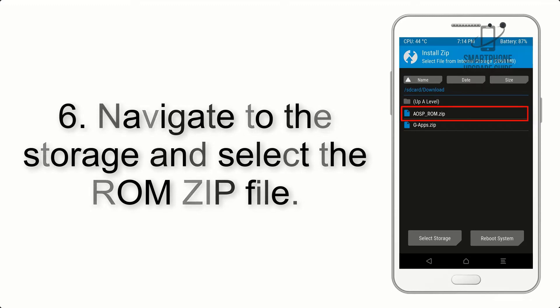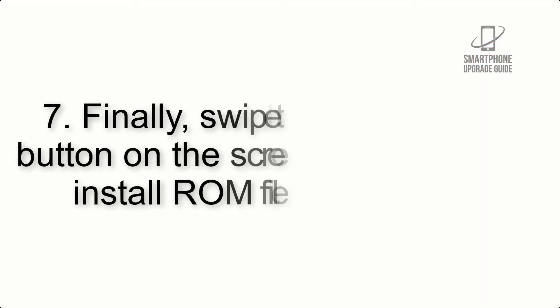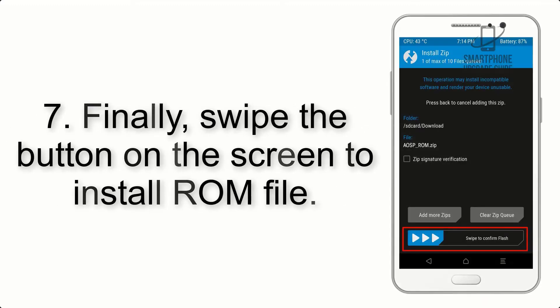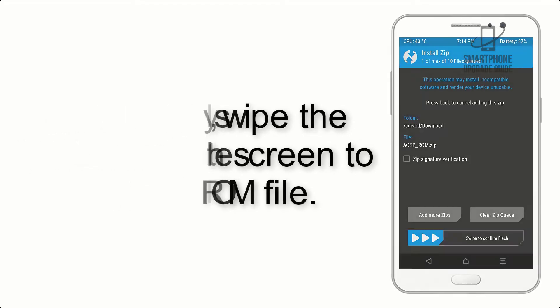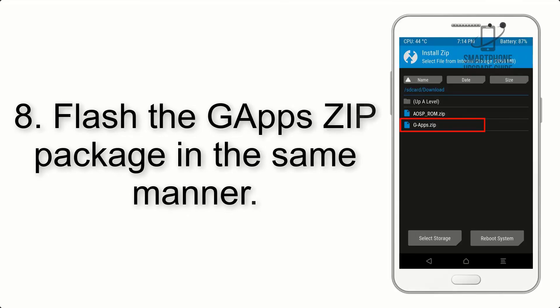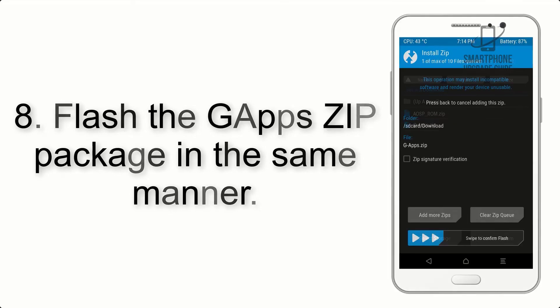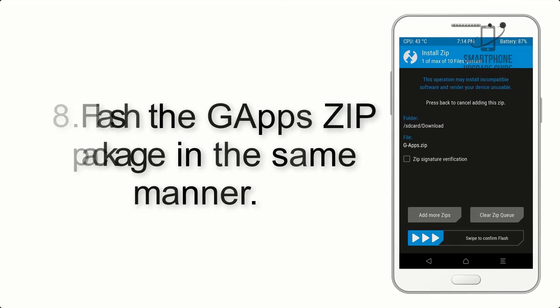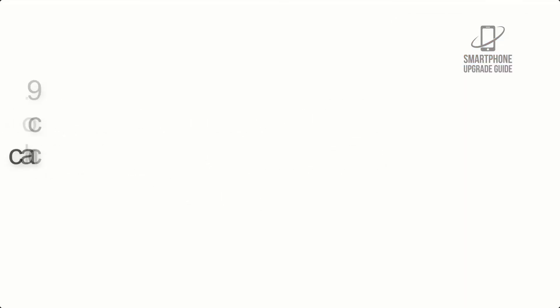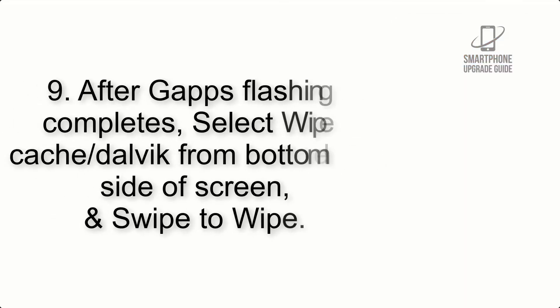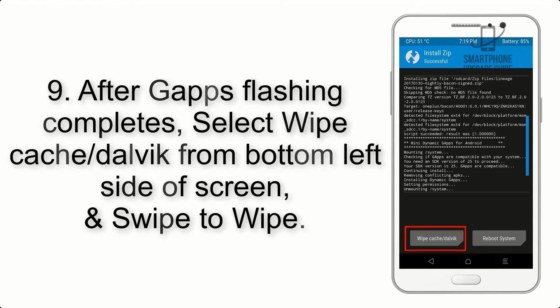Step 5: Go back to the recovery main screen and tap on the Install button. Step 6: Navigate to the storage and select the ROM zip file. Step 7: Finally, swipe the button on the screen to install the ROM file.